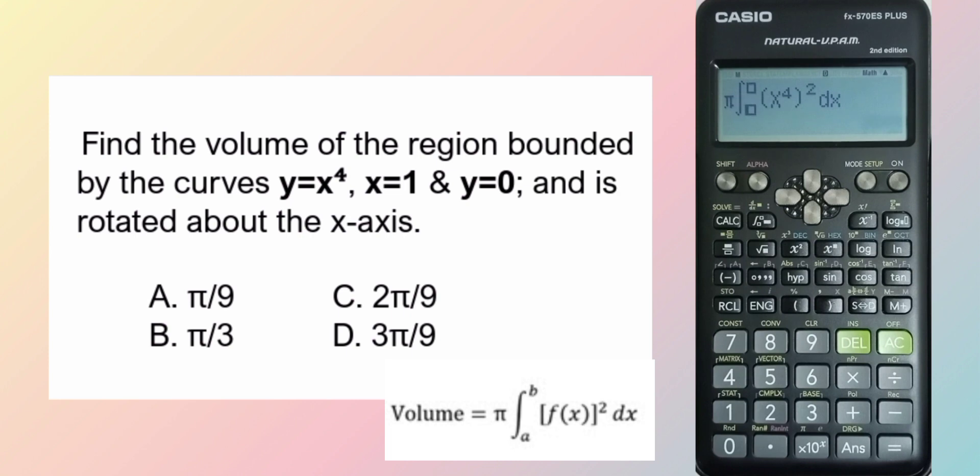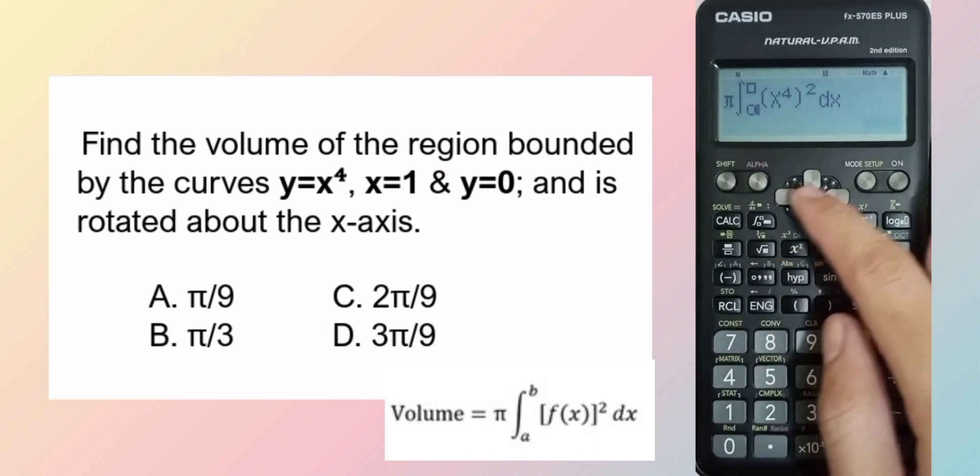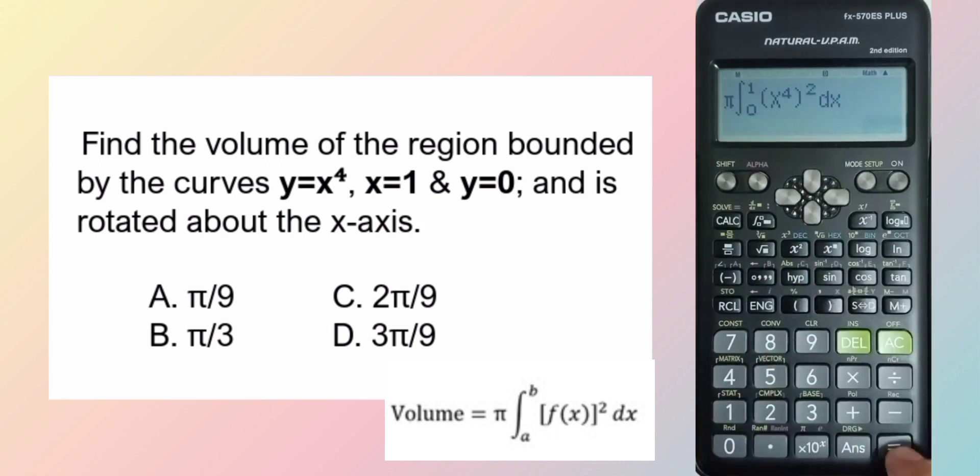Therefore, it is from the origin to x equals 1, 0 to 1. And the answer is 1 over 9 by letter A.